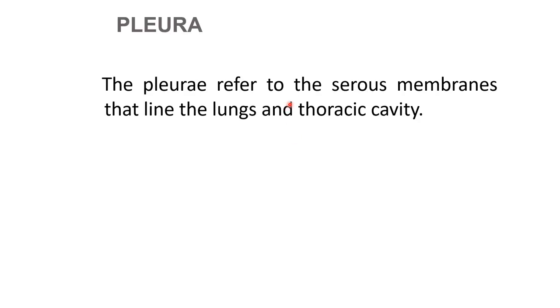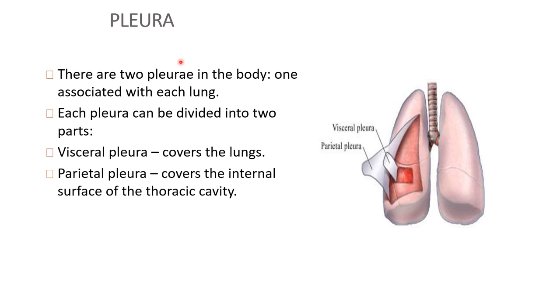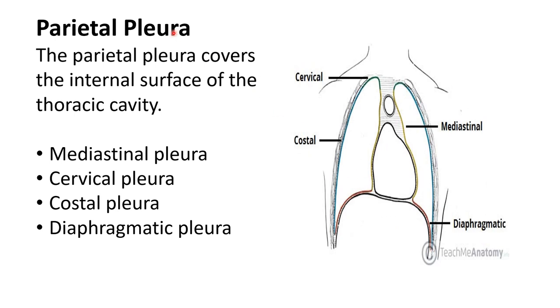This is the end of the structure of urinary bladder. Coming to the 7th question, that is the pleura. The pleura refers to the serous membrane that lines the lungs and thoracic cavity. There are two pleura in the body, one associated with each lung. Each pleura can be divided into visceral pleura and parietal pleura. Draw this picture: the visceral pleura covering the lung, and the parietal pleura as the outer layer of the pleural membrane.